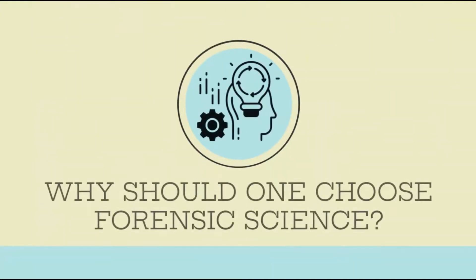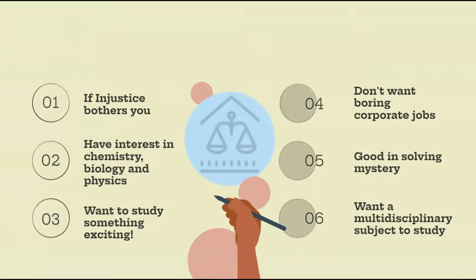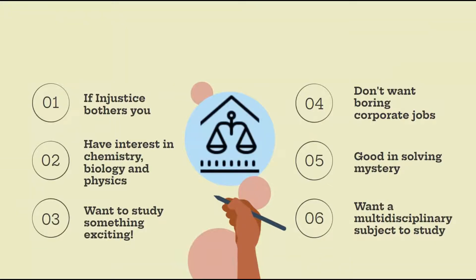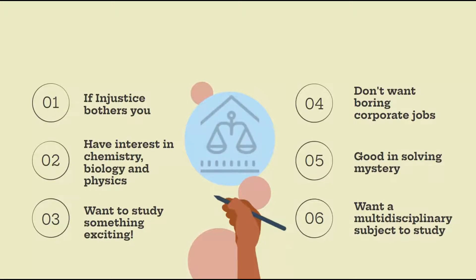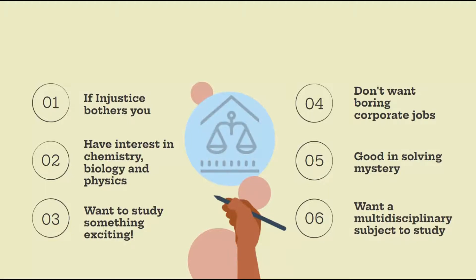Why should one choose forensic science? If nothing bothers you more than injustice and you enjoy chemistry, biology, and physics, a degree in forensic science may be a match made in heaven. As a future forensic specialist, you'll work in crime laboratories, evaluate vital evidence, and make the lives of police detectives much simpler — especially if you have a strong sense of justice, a scientific mind, and a desire to assist law enforcement. You'll feel fantastic knowing you're helping to apprehend dangerous offenders and solve complex cases. Consider a career in forensic science if you want to deliver the best precise findings. You won't regret it.